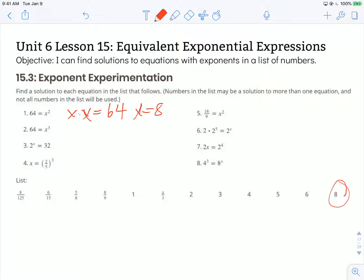Number two: 64 is equal to x to the third power. I know that x cubed or x to the third power is the same thing as x times x times x. So I'm looking for the same number that can be multiplied by itself three different times to come up with 64. And so I know it has to be less than 8, so I'm going to be looking at these numbers less than 8. And I'm just going to try one.